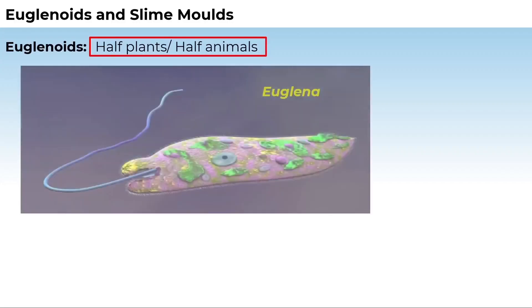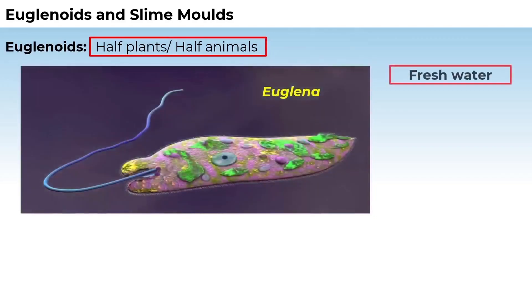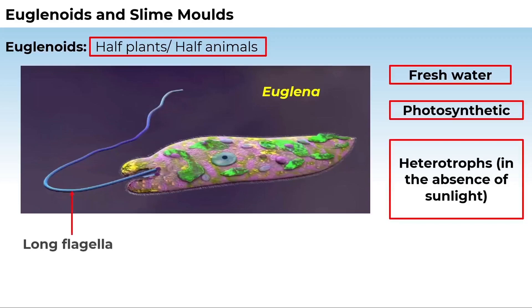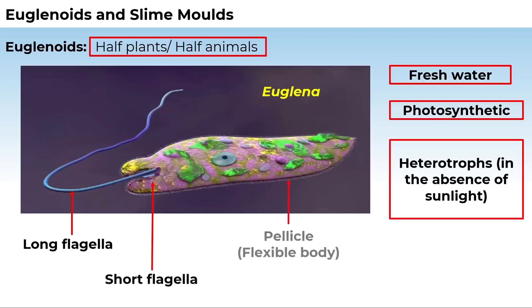The majority of euglenoids are fresh water organisms found in stagnant water. They are photosynthetic in the presence of sunlight, but in the absence of sunlight they behave like heterotrophs by predating on other smaller organisms. They have two flagella — a long one and a short one. Instead of a cell wall, they have a protein-rich layer called pellicle, which makes their body flexible.